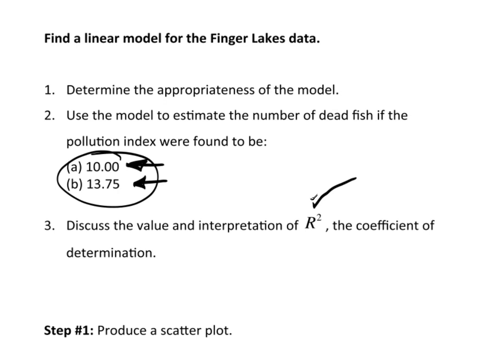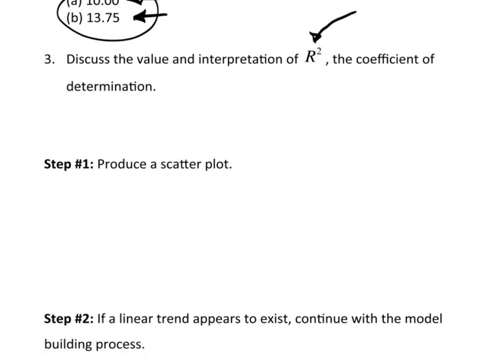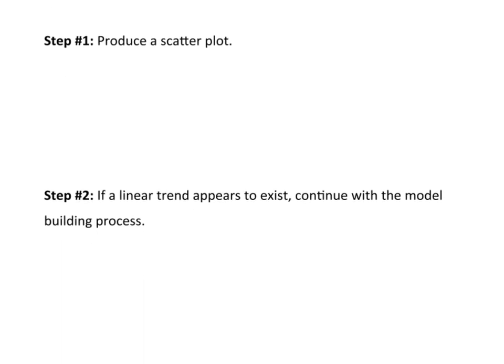And then I want to talk briefly about this value of R squared, which is referred to as a coefficient of determination. We'll talk about that. You'll see it in the output, and we'll talk about that in just a moment. So let's go ahead and start off doing a scatter plot. And if the scatter plot appears to be linear, then I want to continue and actually build the model.